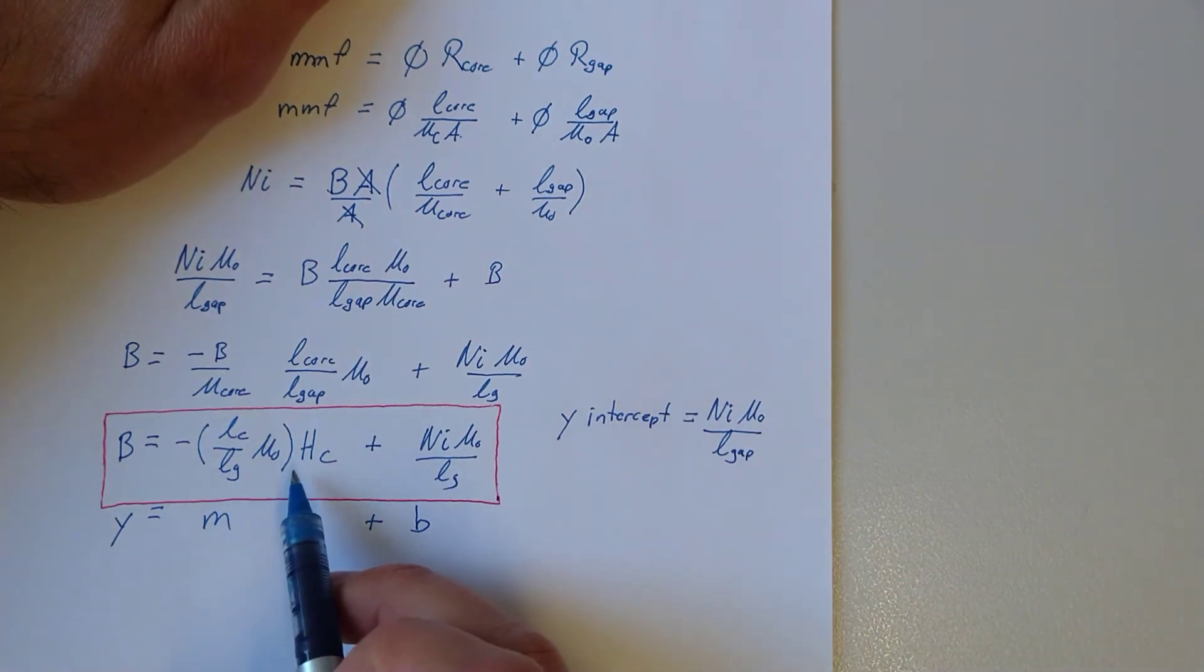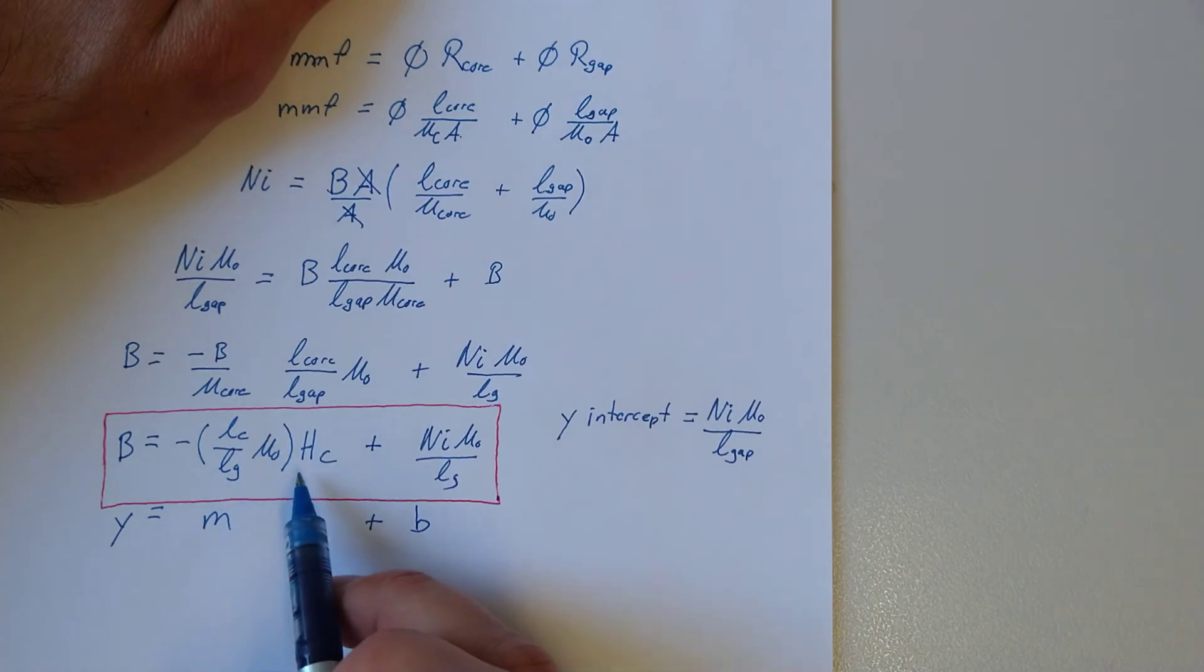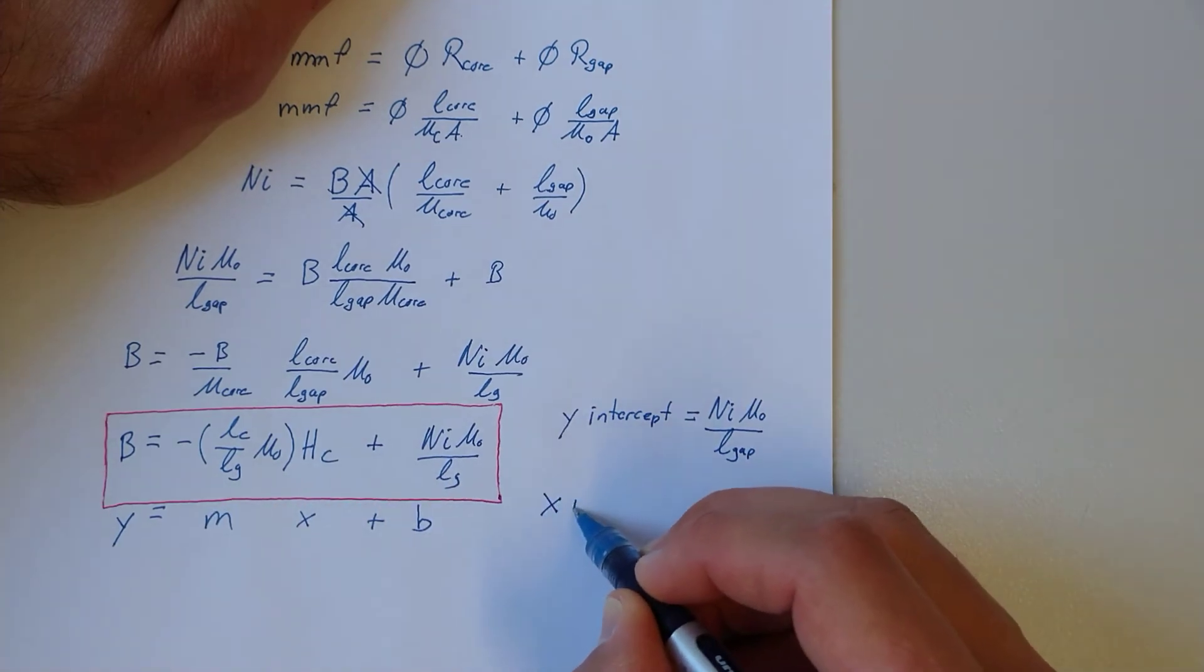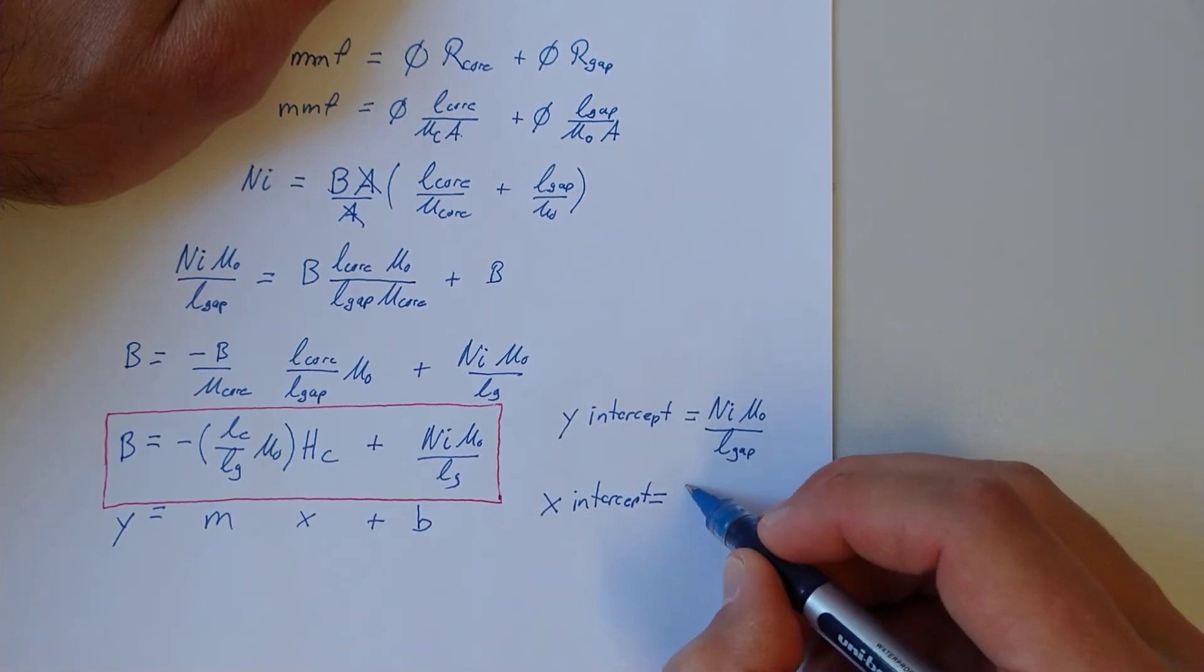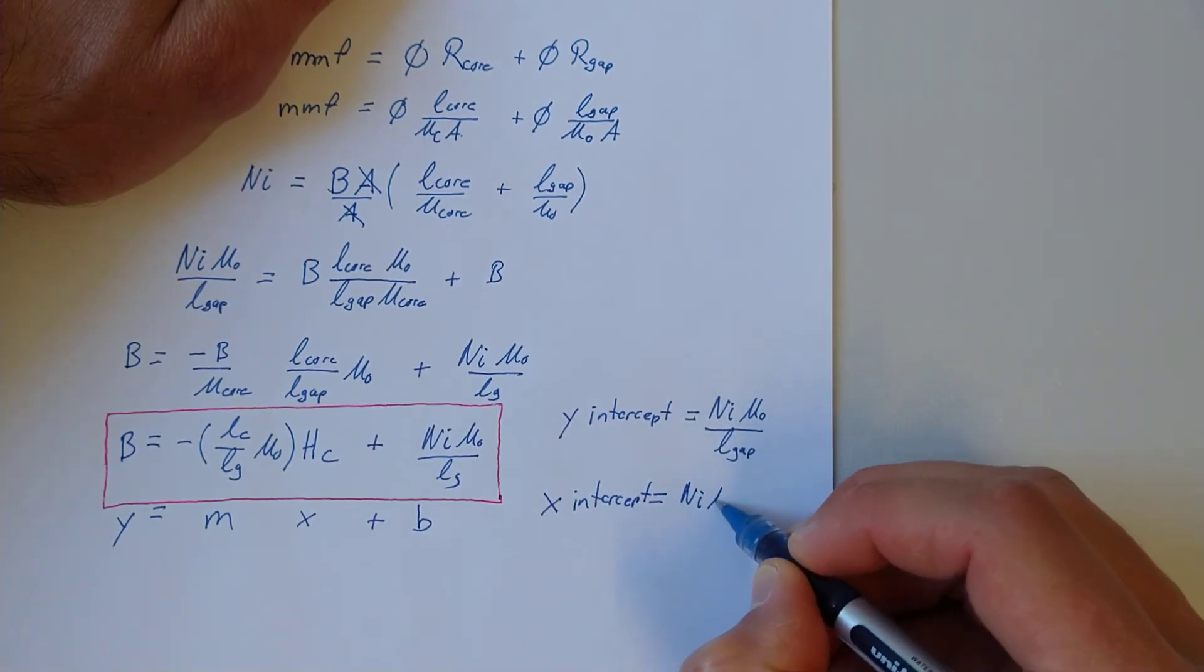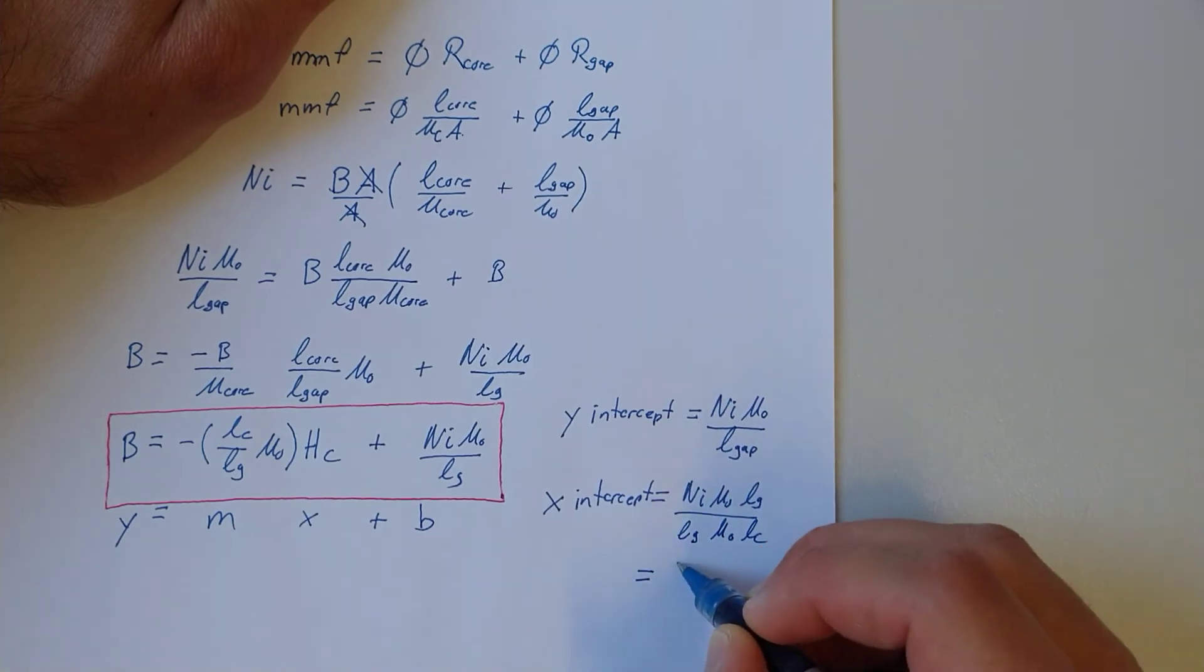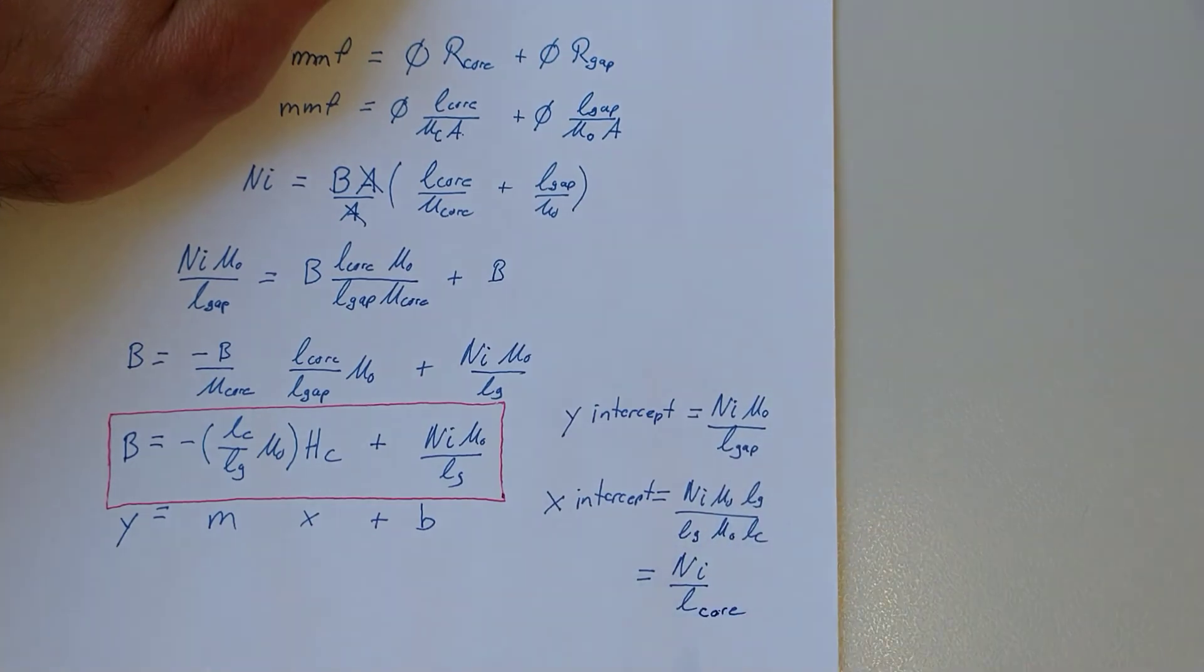Or when these two terms are equal. The x-intercept is given by NI mu naught LG over LG mu naught LC or just NI over L of the core. These are nice terms.